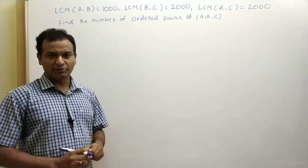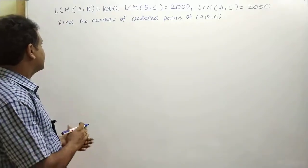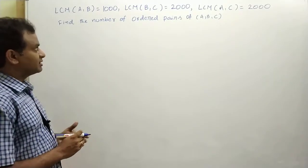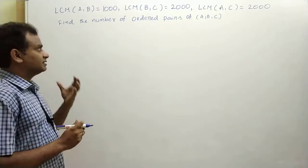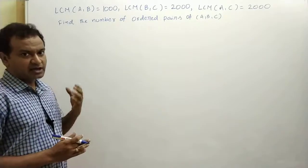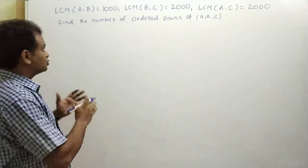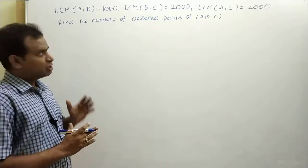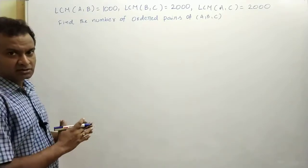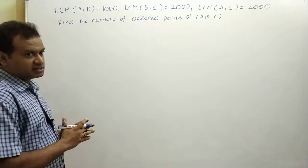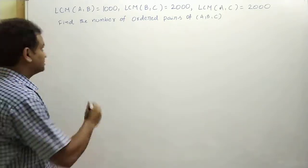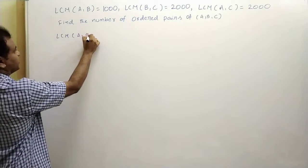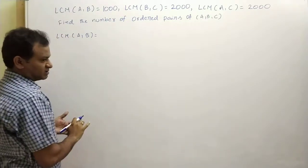This is a very beautiful question. It is given that LCM of (a, b) is 1000, LCM of (b, c) is 2000, LCM of (a, c) is 2000. We need to find the number of ordered pairs (a, b, c) that satisfy this condition. First, we should write these LCMs in their prime factorization format. LCM of (a, b) is given as 1000.